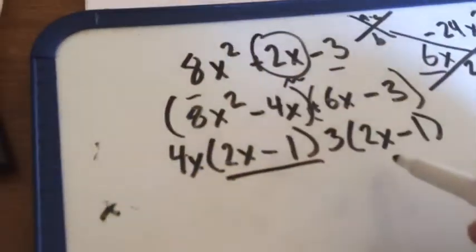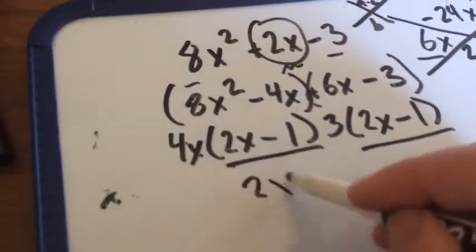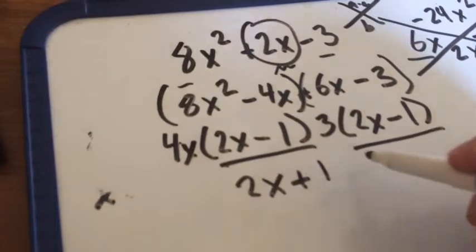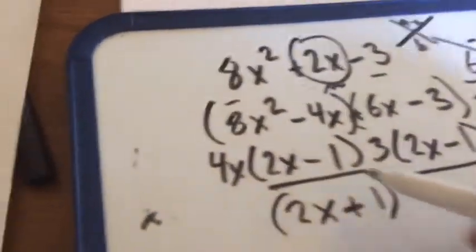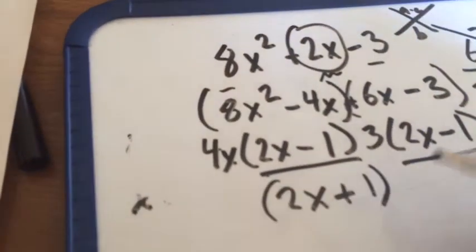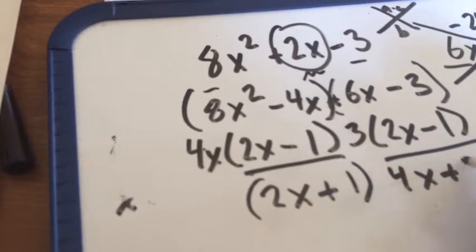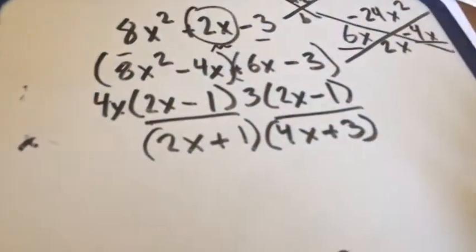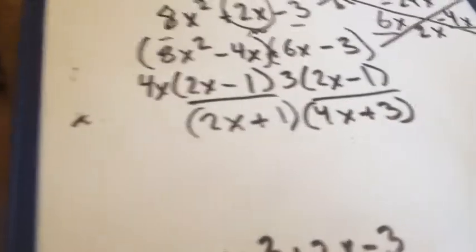Take the common factor, 2x minus 1. And then, the remaining 4x plus 3. Those are your remaining factors of f.